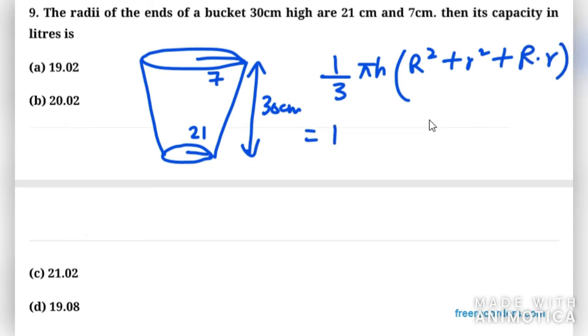So 1/3 × π, the value of π is 22/7, h is 30, in bracket: 21² + 7² + 21×7. We can cancel 3 with 30, so it becomes 10.